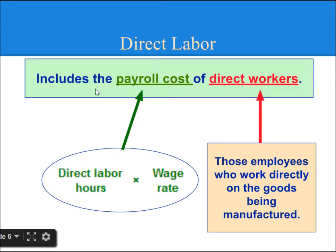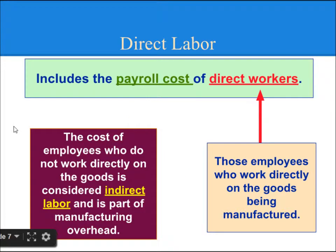What is Direct Labour? Direct Labour includes the Payroll Cost of Direct Workers. Payroll Cost can be calculated as Direct Labour Hours multiplied by Wage Rate. Direct Workers are those employees who work directly on the goods being manufactured. The cost of employees who do not work directly on the goods is considered Indirect Labour and is part of Manufacturing Overhead.